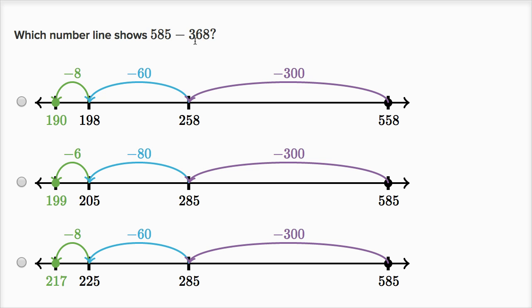So we want to subtract 300s, six tens, and eight ones. So in both of these, we subtract 300s, and then we want to subtract six tens. Six tens, and then eight ones.